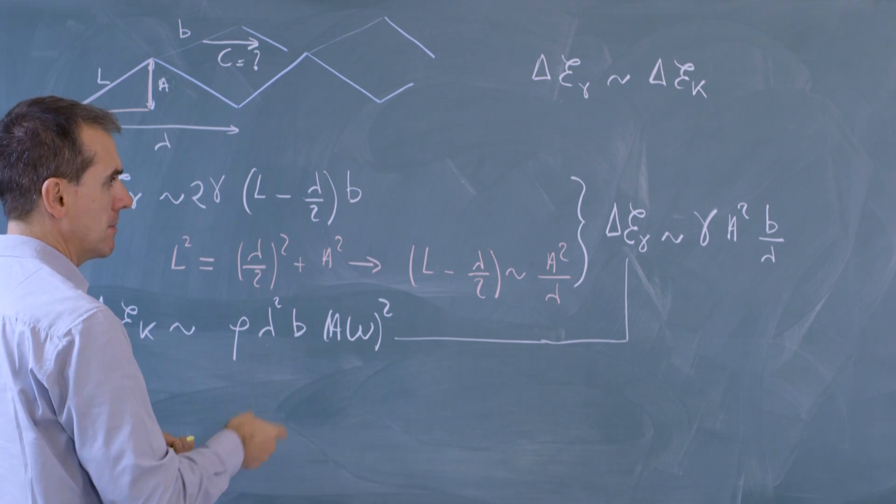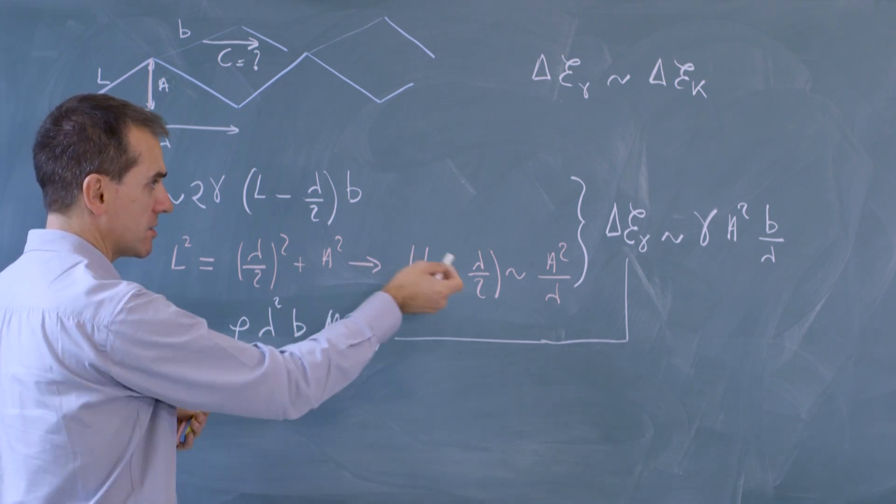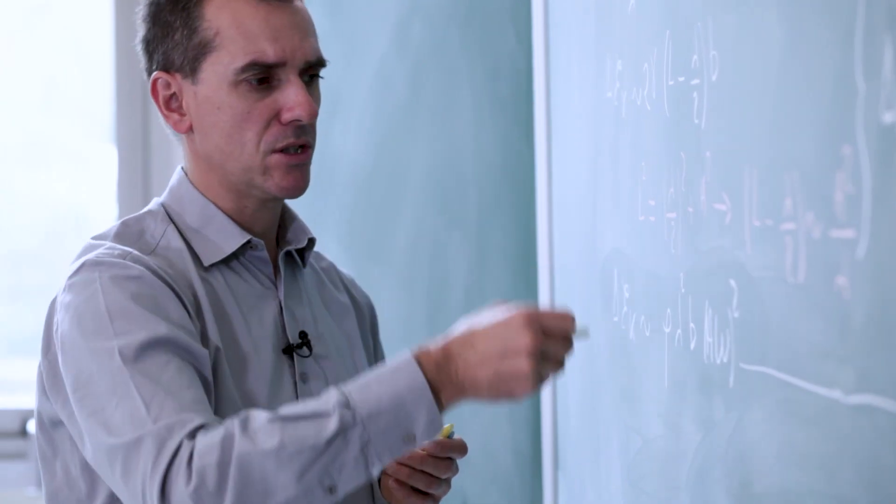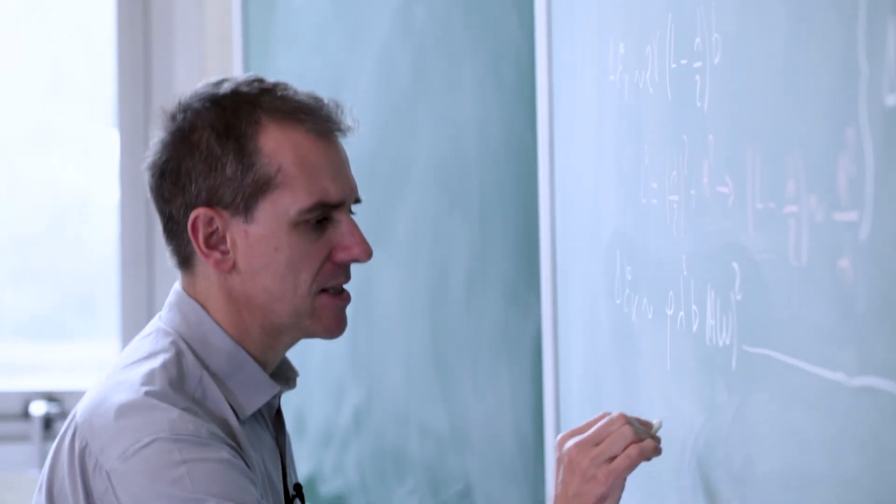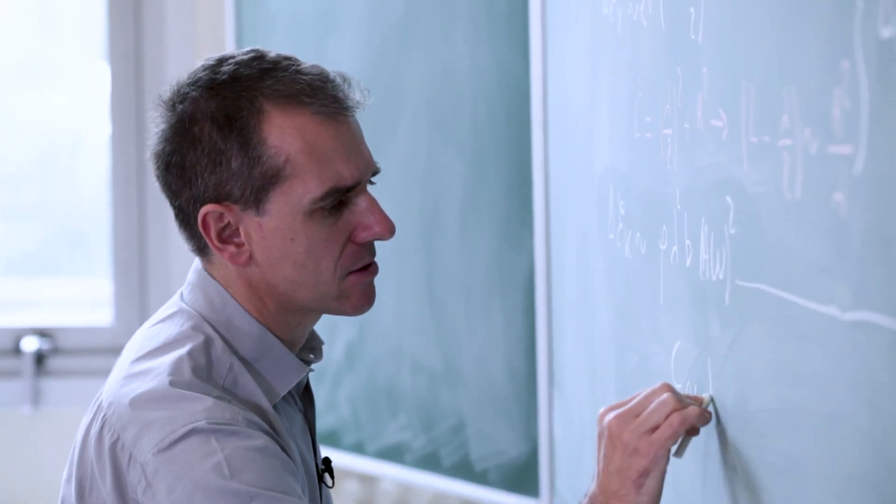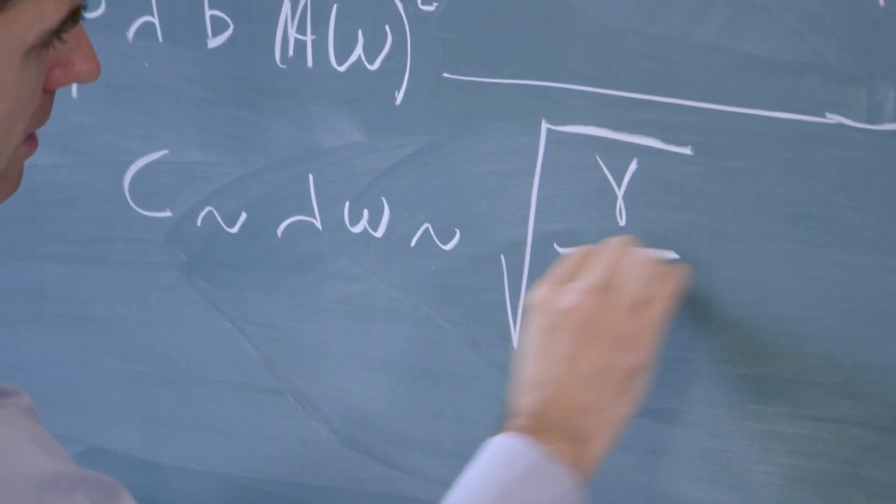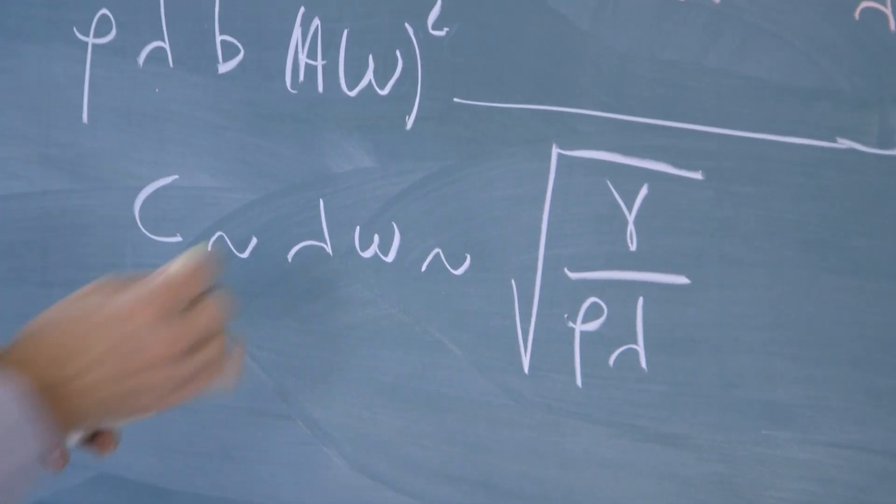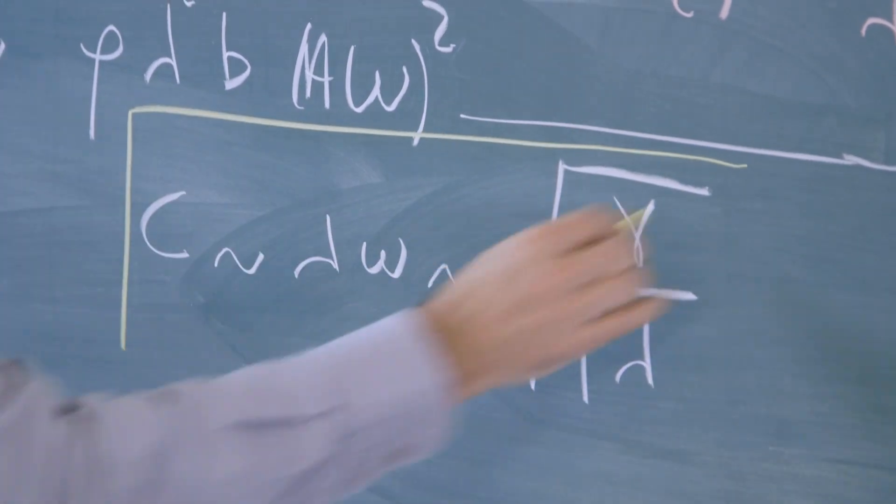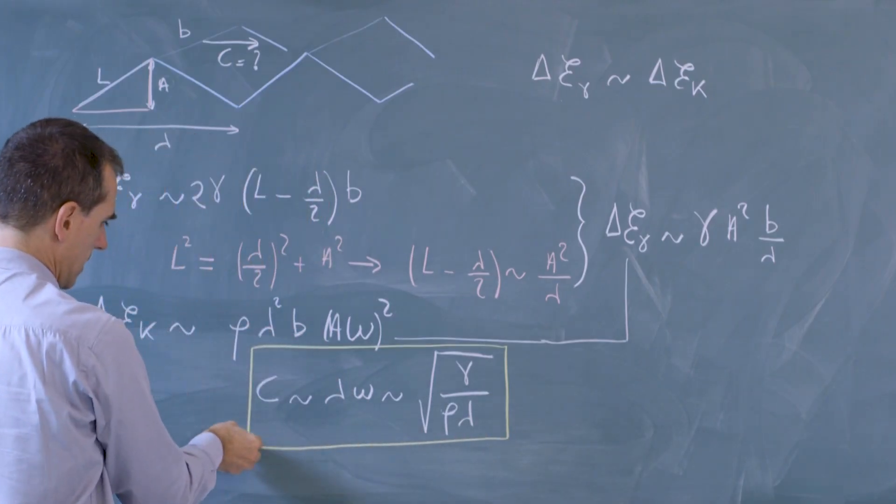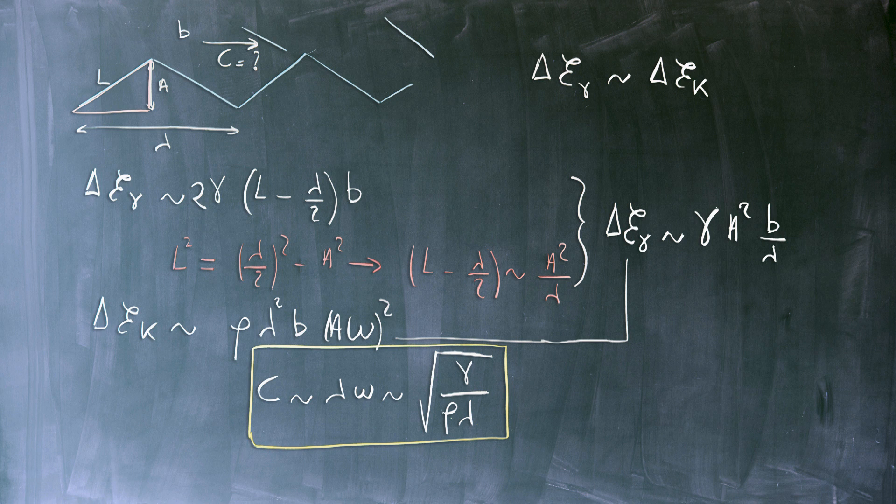So using these two expressions, then we can balance them and say that during the wave propagation, there will be an exchange of surface energy into kinetic energy. And this allows us to find that c, which goes like lambda omega, is simply square root of gamma divided by the density times lambda. So this is our scaling law evaluation of capillary wave propagation.